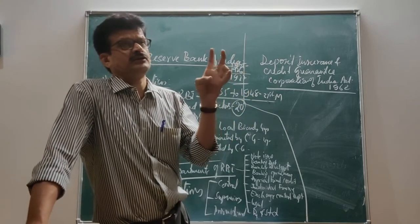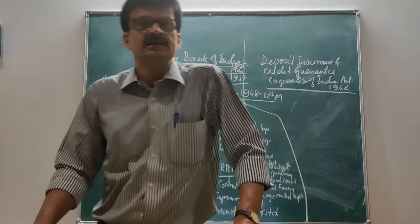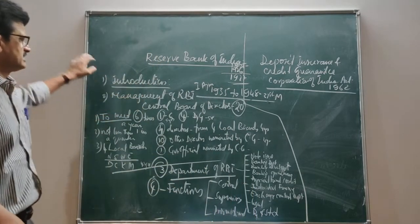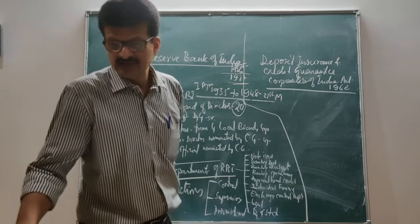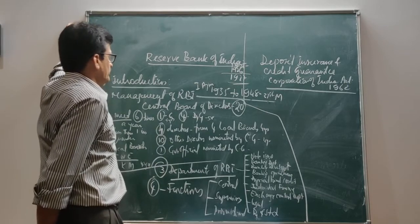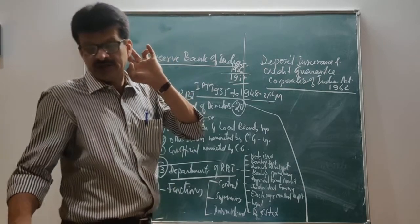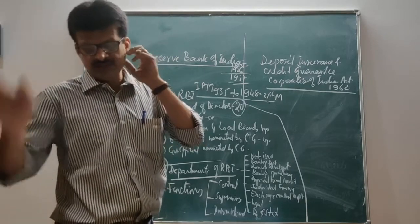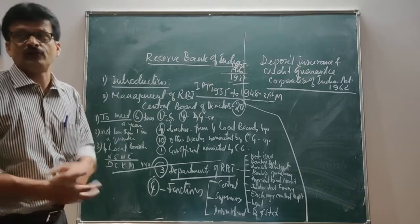The RBI is managed by a central board of directors comprising 20 directors. One is the Governor, who is the chairman of the central board of directors and the chief executive officer of the Reserve Bank of India. He is a full-time officer appointed for a period of five years and is eligible for reappointment. Shaktikanta Das is the present governor of RBI. Prior to him were Urjit Patel and Raghuram Rajan. Manmohan Singh, the former Prime Minister of India, enjoyed the governorship of RBI for two terms.